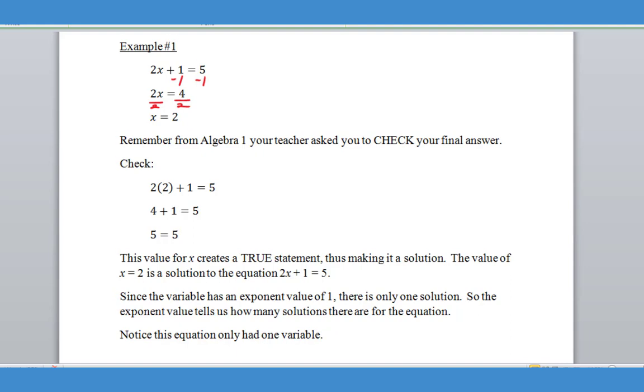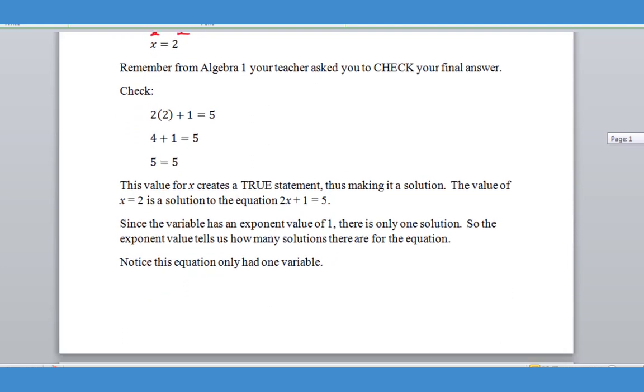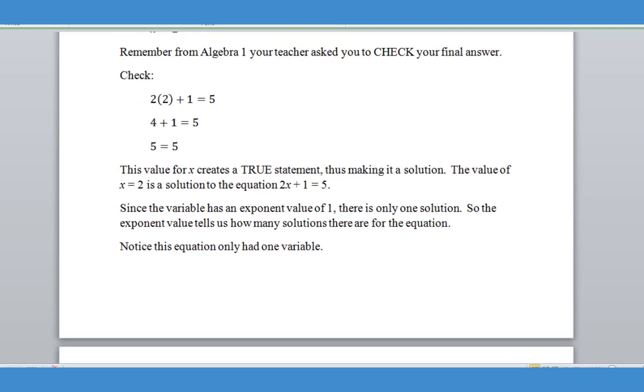And so that is just a simple explanation of what a solution is and how it creates a true statement. Now I want you to notice here that we had X equals 2 and we only had one solution. And that is because of the exponent value of the given equation. And so you can see here if I take 2X plus 1 equals 5, the exponent value for that X is an understood one. So that tells us that there is only one solution for this particular equation. Now as we move on later in the year and we start to learn about other types of functions,